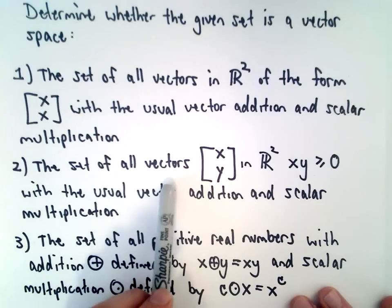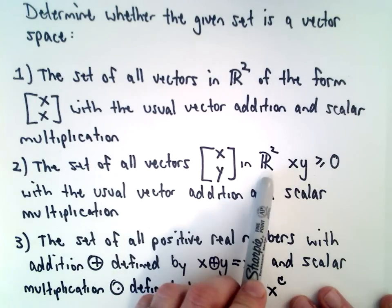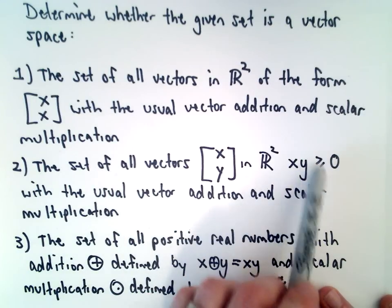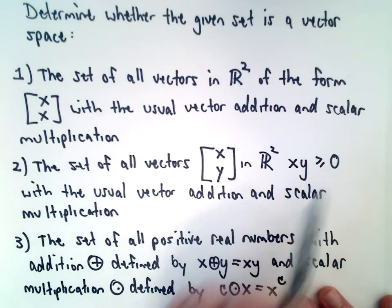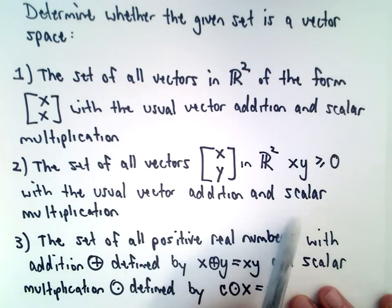Number two, we've got the set of all vectors [x, y] in R2, so that if we take x times y, that's going to be greater than or equal to zero. And again, with the usual vector addition and scalar multiplication.